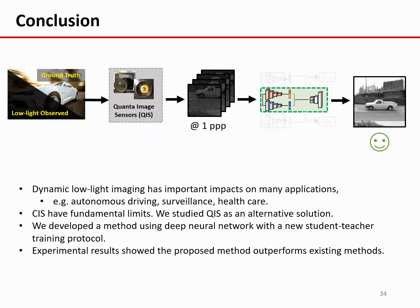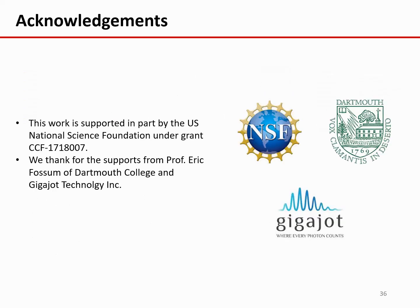In conclusion, we proposed a solution to the dynamic low-light imaging problem. This problem has important impacts on many applications that require taking images in dark environments — for example, autonomous driving, surveillance, and healthcare. CIS has fundamental limitations due to their inability to count photons. We therefore studied QIS as an alternative solution. We developed a method using deep neural networks with a new student-teacher training protocol, and showed with experimental results that the proposed method outperforms existing methods. This work is supported in part by US NSF. We thank the supports from Professor Eric Fossum at Dartmouth College and Gigajot Technology.